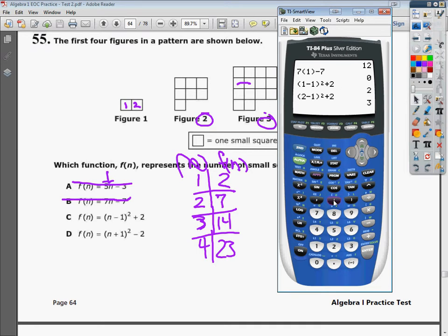Let me clear all these out to make room. So I'm going to plug in a one right there. So I get one plus one squared minus two. And that gives me two. So I plugged in one and got two.